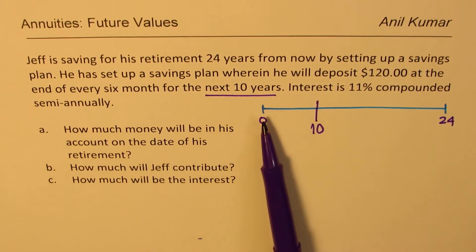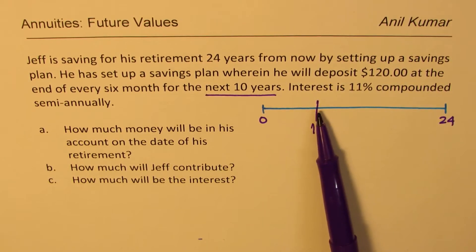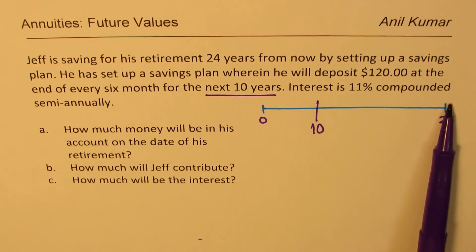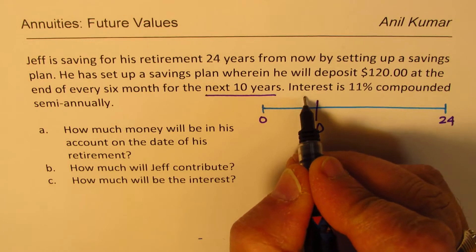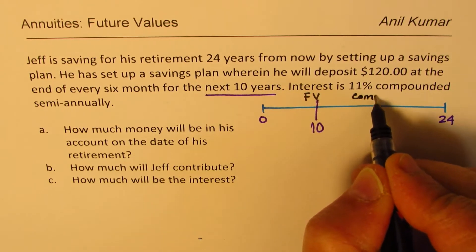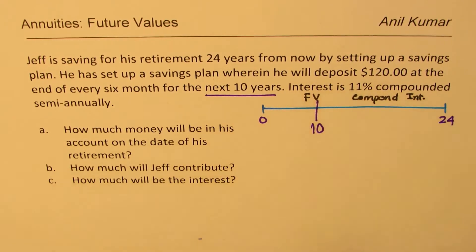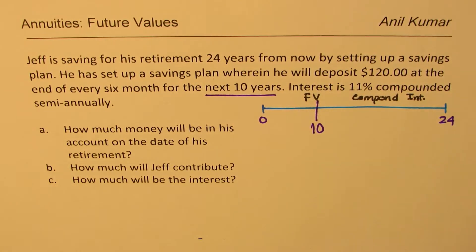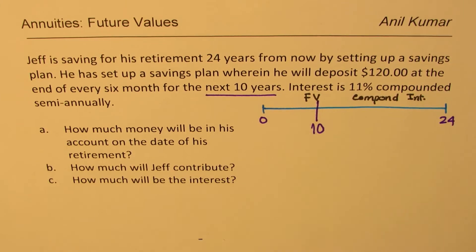The first part is to find the future value after 10 years, and then we calculate the growth of that amount from year 10 to year 24. So we are working with two formulas: first the future value of an annuity, and then compound interest to carry that amount forward to retirement.